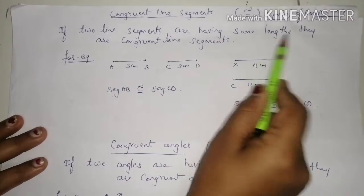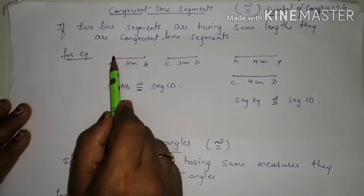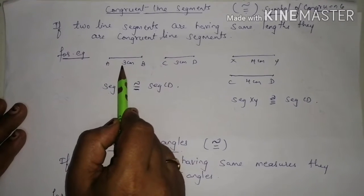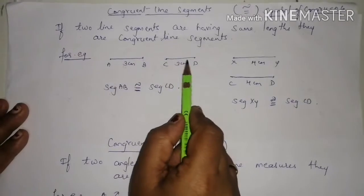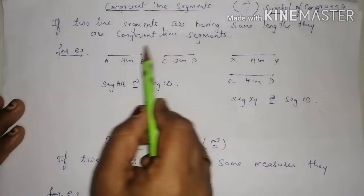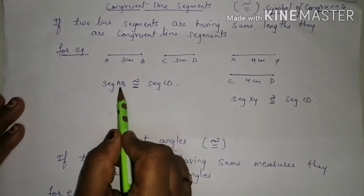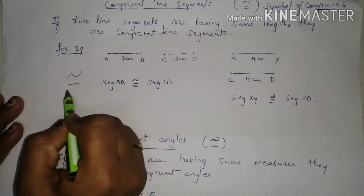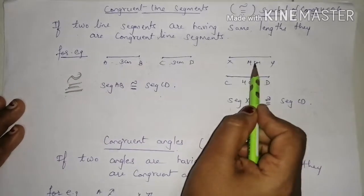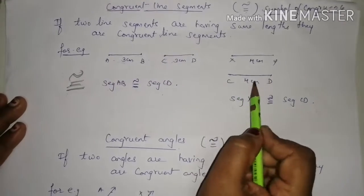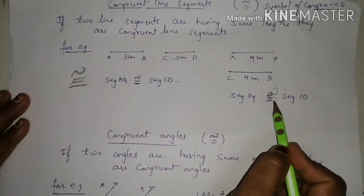For example, AB is 3 centimeters — that is one segment. You can measure it with a scale. CD is also 3 centimeters, so both have the same measurement. We write: segment AB is congruent to segment CD, using the congruence symbol. One more example: if segment XY is 4 centimeters and segment CD is also 4 centimeters, we write segment XY is congruent to segment CD.